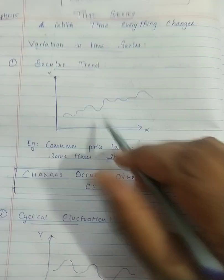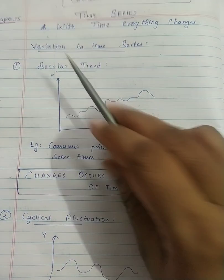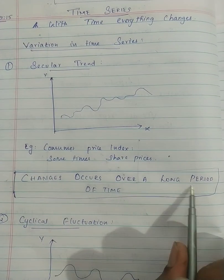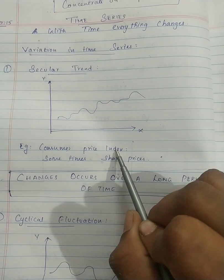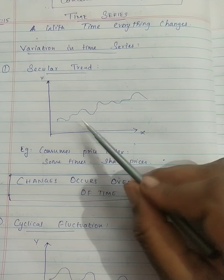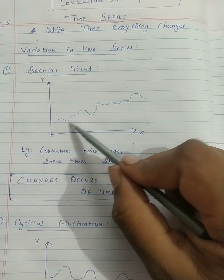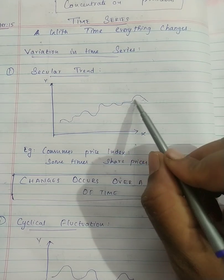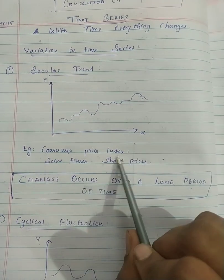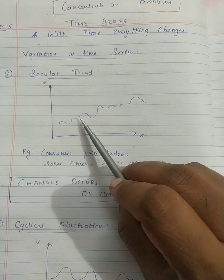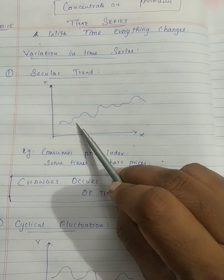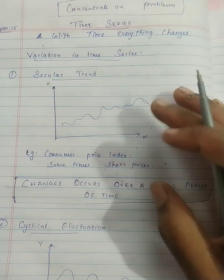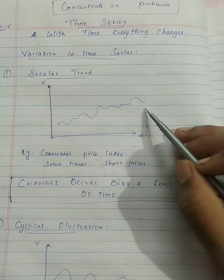Variation in the series. This is a secular trend — changes occur over a long period of time. Let's take a consumer price index as an example. If a pencil costs 50 rupees, it will increase constantly over time. So the consumer price index will keep rising. That is a secular trend.